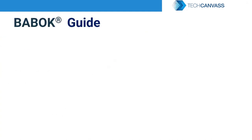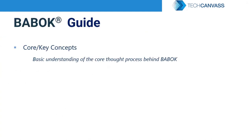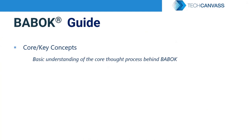Now let's understand what each chapter refers to or contains. The core and key concepts chapter describes all the terms used in BABOK that are important to understand the guide. This includes descriptions of types of requirements, different kinds of stakeholders, and terms like organization and the core concepts model.